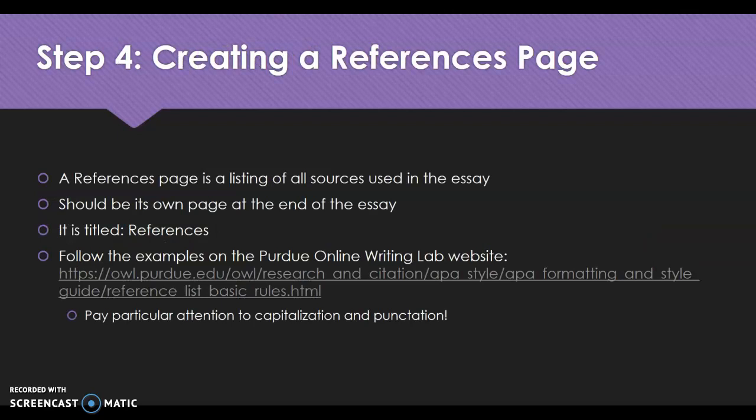Step four, the last step, is creating the reference page. Every different source you use — book, magazine, website — that is quoted within your essay needs to be cited on what's called a references page. In APA, which is what we're using, this references page is a listing of every source used in your essay. If you consulted it but didn't use it, you don't need to include it. Every time you cited something, there should be an entry, but if the same source is used multiple times, it's still only listed once. It needs to be its own page at the end of the essay, simply titled 'References.'